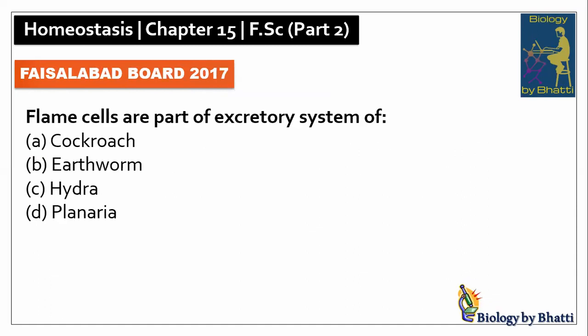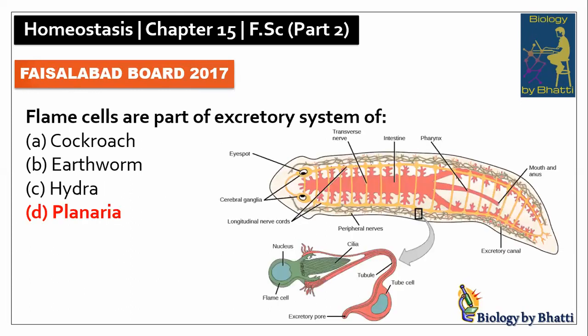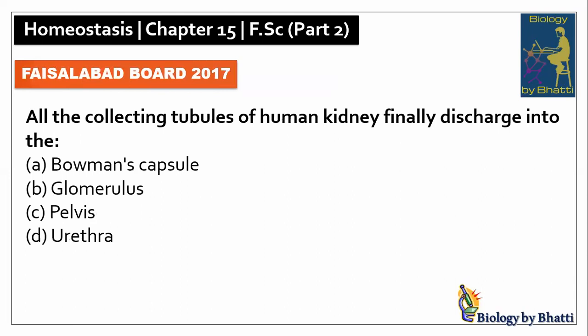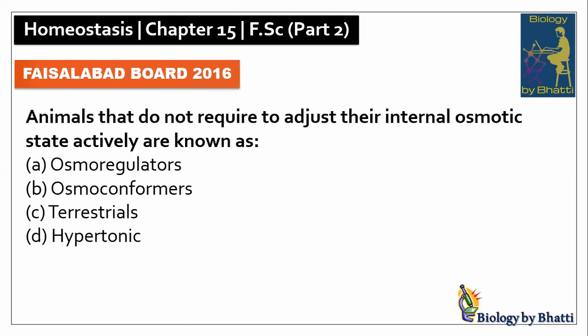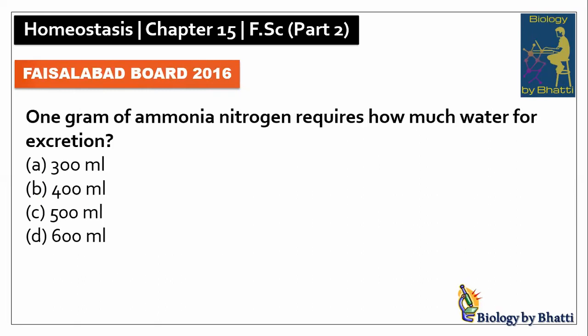Faisalabad Board 2017: flame cells are part of the excretory system of planaria, the answer was D option. In this paper, all the collecting tubules of the human kidney finally discharge into the renal pelvis, so the answer was C option. Faisalabad Board 2016: animals that do not require to adjust their internal osmotic state actively are known as osmoconformers, the answer is B option.